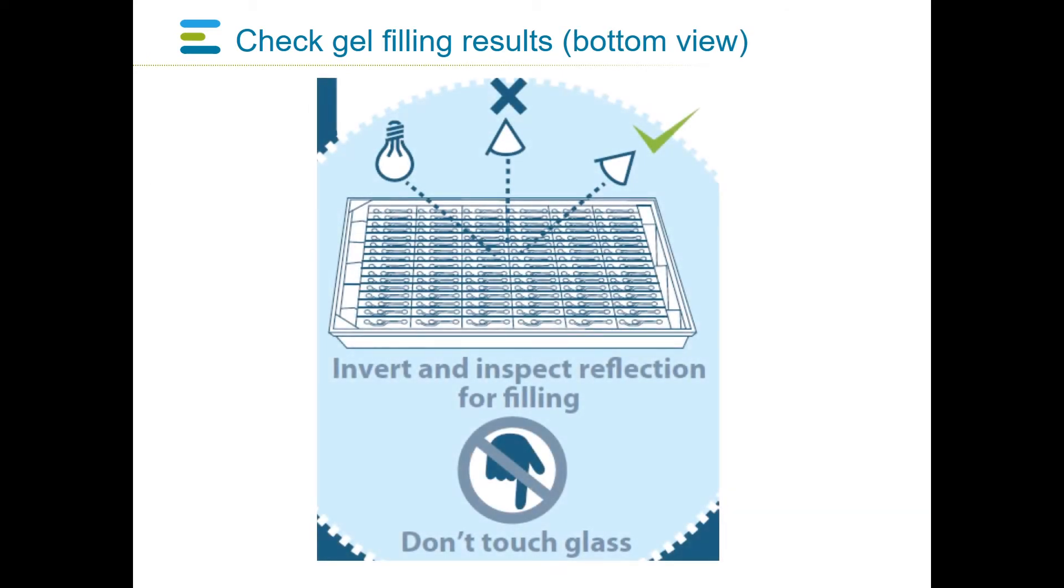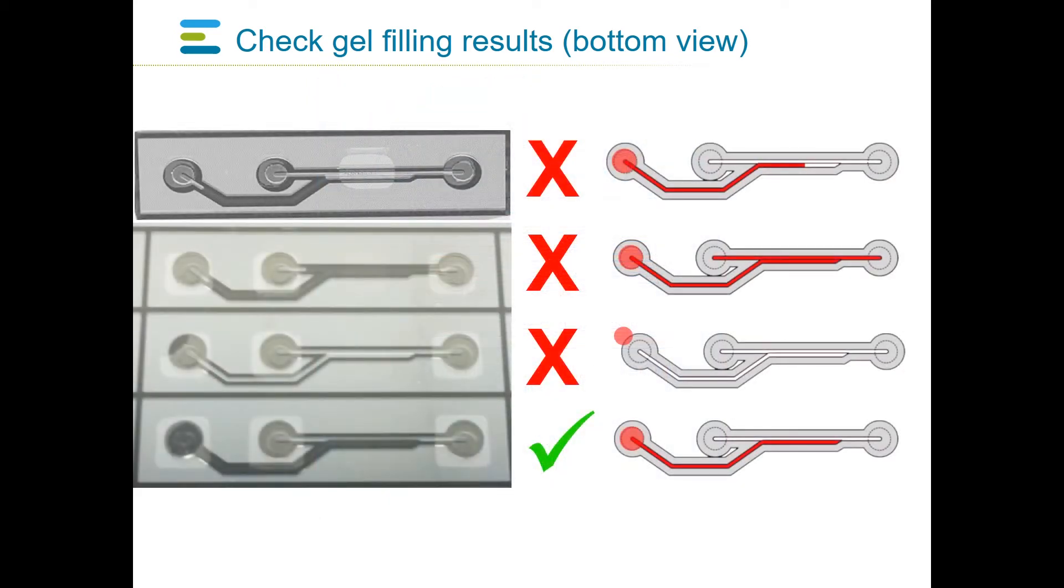In addition, inspection of proper filling can be performed by looking at the reflection of the light in the bottom of the plate after turning the plate over. Walls and filled channels will show up dark, while empty channels will show up bright. In a properly filled channel, the gel lane should be fully dark, while the perfusion channel shows up light.